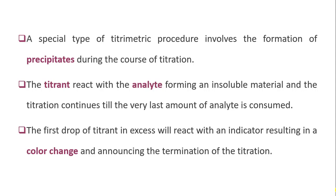The titrant reacts with the analyte forming an insoluble material — a precipitate — and the titration continues until the very last amount of analyte is consumed. You can find the difference between the equilibrium point and the end point. The equilibrium point is when the titrant has consumed the total amount of analyte. The end point is when you get a precipitate or a color change.